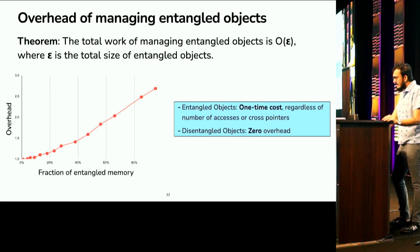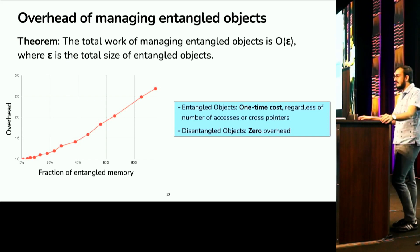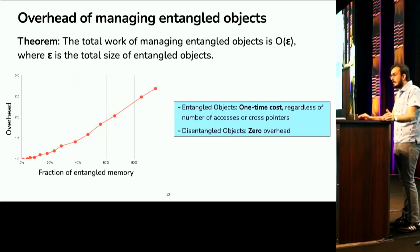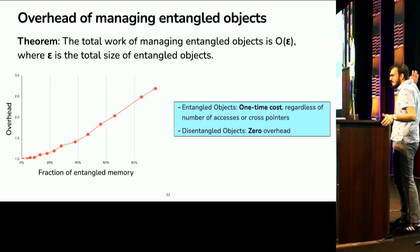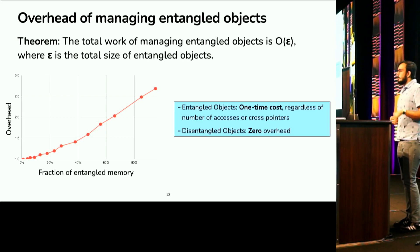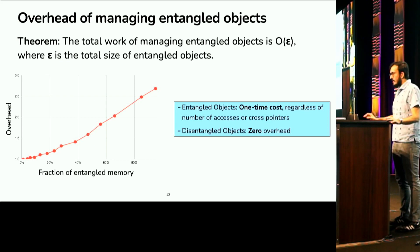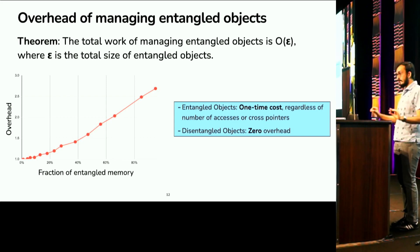So, an interesting challenge is how do we manage or reason about the overhead of managing these entangled objects? And to account for this, we proved a theorem which says that the total work of managing entangled objects is order epsilon, where epsilon is the total size of entangled objects. The main takeaway from this theorem is that entangled objects, if you have them in the system, you pay a one-time cost, which is for pinning, and then it doesn't matter how many times you read them, how many cross-pointers you make to them, there is zero cost. And the second observation to take away from this theorem is that disentangled objects pay zero overhead.